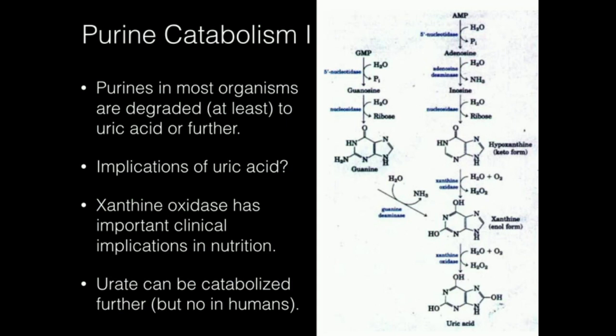Inosine is essentially inosinate from purine synthesis minus the phosphate — if you take the phosphate off of IMP, that is inosine. Adenosine deaminase can be deficient in some people, and that's going to cause a horrible immune disease. We'll talk about that in another video, but suffice to say, adenosine deaminase deficiency can cause a very debilitating immune system problem.